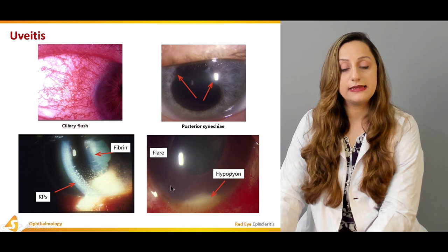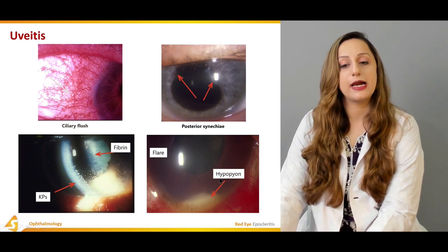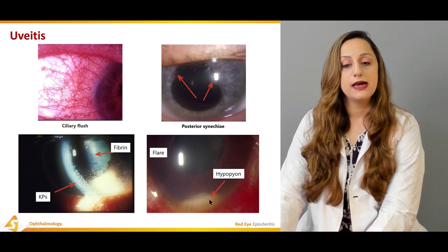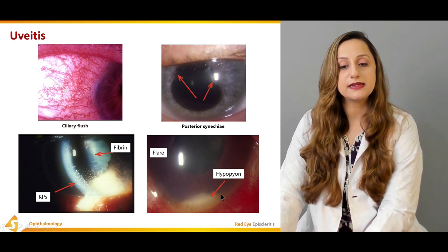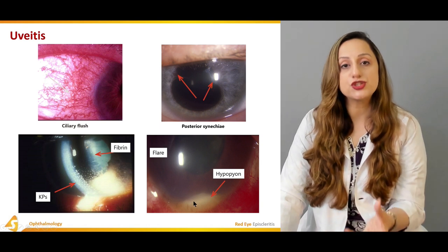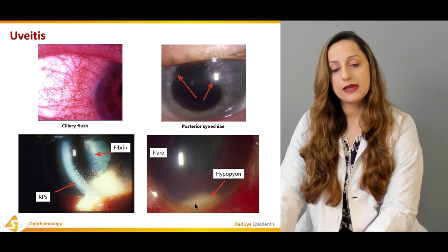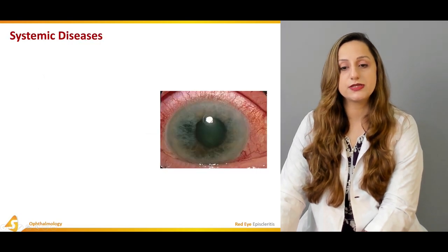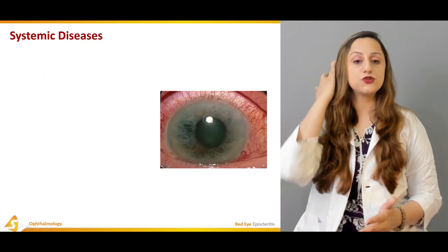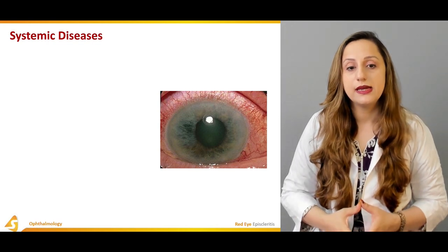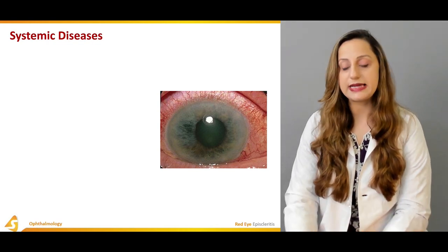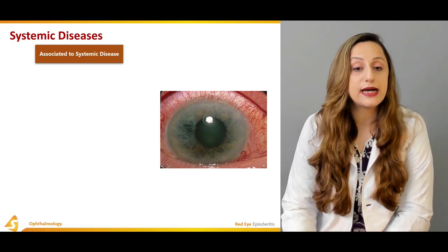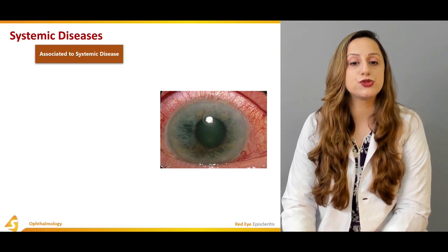We also see flare and glare phenomena. Hypopion is the accumulation of exudates due to uveitis located inferiorly, as gravitational forces act on the exudates. Systemic diseases that can manifest as red eye associated with uveitis include seronegative arthropathies.